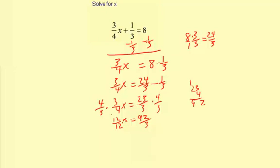12 divided by 12 is 1. So x equals 92/3. That's kind of a weird number. I'm not sure what that represents. So I'm going to divide by 3 and make it a mixed number.